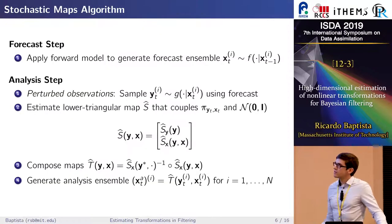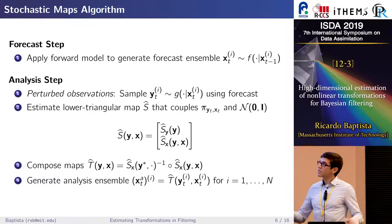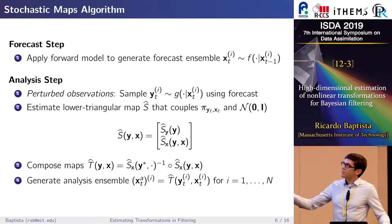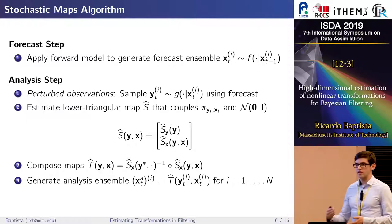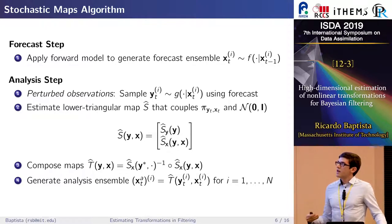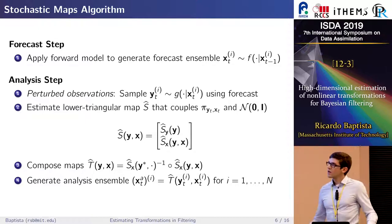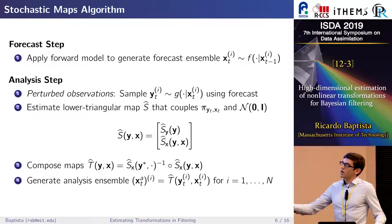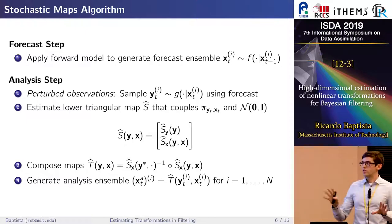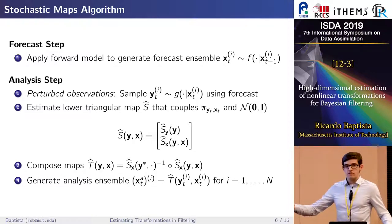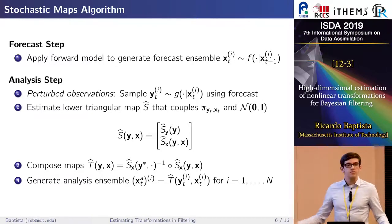This is the basis of the stochastic maps algorithm. At every filtering step, given forecast samples x_t^i, we use our likelihood model to sample perturbed observations, giving a collection of samples from joint density pi(y, x). We estimate the lower triangular map S coupling this joint to a standard Gaussian. Then given the lower map components, we compose them to generate a transformation mapping the joint directly to the conditional — the posterior for a particular observation y — and apply this to each forecast sample to get the analysis ensemble.